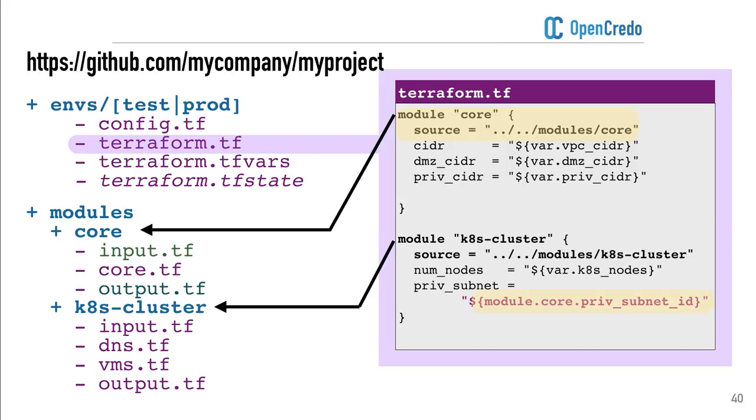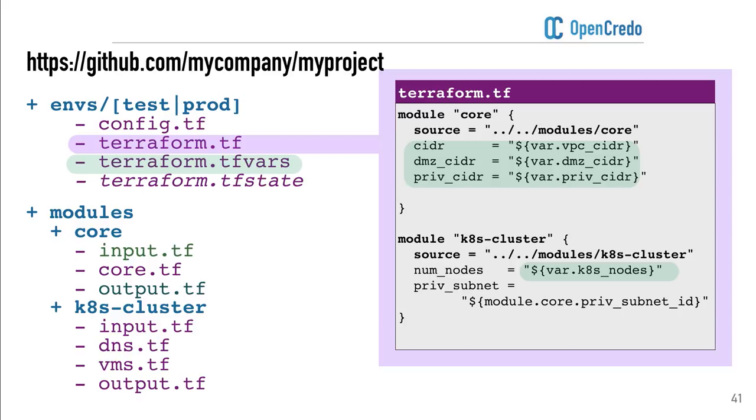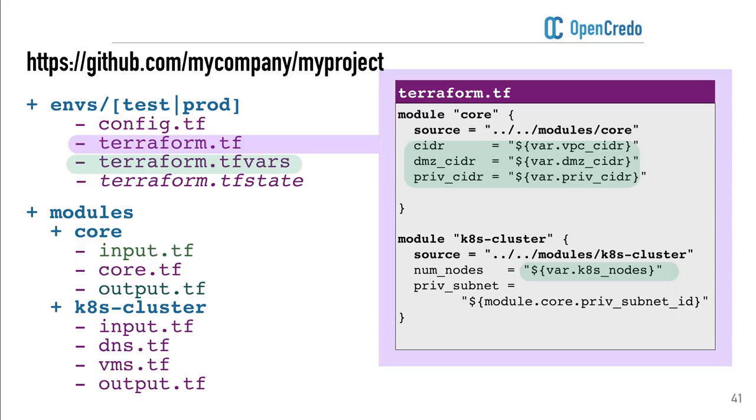The example is that our core module creates our private subnet, and we need that private subnet ID to be passed as input into our Kubernetes cluster module so it gets created in the right subnet. Crucially, because all the modules are configurable, there's a very clear contract, which means that for different environments we can configure things differently. So maybe in your test environment you only need three Kubernetes nodes, but in production you want five. Some clients take this even further with quite different test and production compositions.